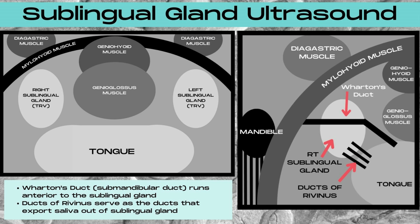Anterior to the mylohyoid muscles are going to be the anterior body of the digastric muscles. On the image to the right, you'll note that Wharton's duct travels anteriorly over the top of the right sublingual glands in the transverse plane, and this is why stones within Wharton's duct — which is actually the submandibular duct — can commonly be mistaken for stones within the right sublingual gland. Note the placement of the ducts of Rivinus: these are the ducts connecting the right sublingual gland to the tongue that export the saliva from the right sublingual gland. This would be the true location of a sublingual stone, which are rare. More commonly, you'll see a stone within Wharton's duct — a submandibular stone mimicking the appearance of a sublingual stone.